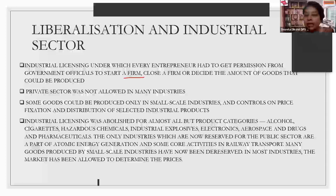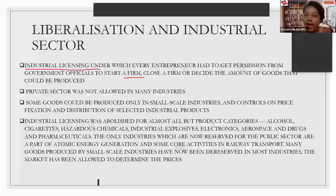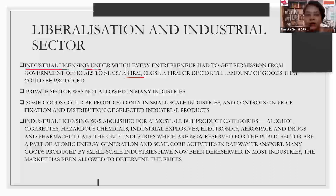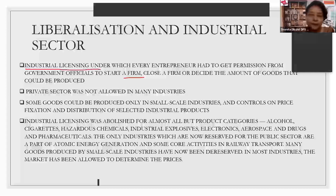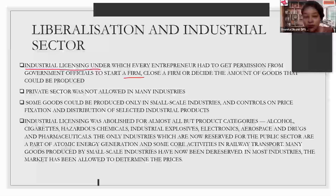The best thing under liberalization was that this industrial licensing policy was completely withdrawn. Entrepreneurs no longer had to take permission from the government to start a firm. Although it was not completely withdrawn — it was restricted to some limited industries as required. Many private industries were also allowed, which were earlier not permitted to start production.